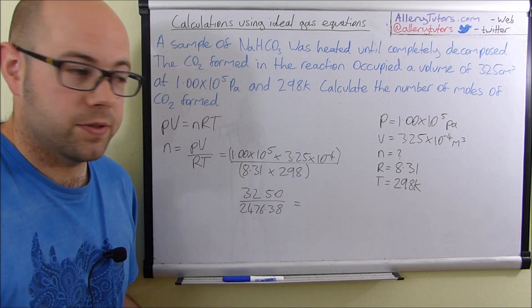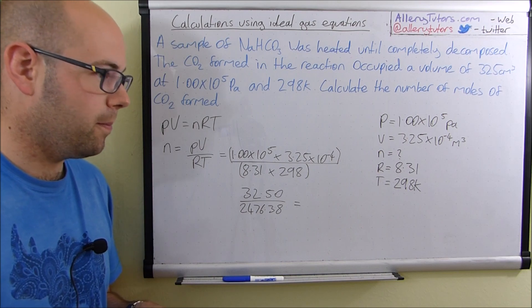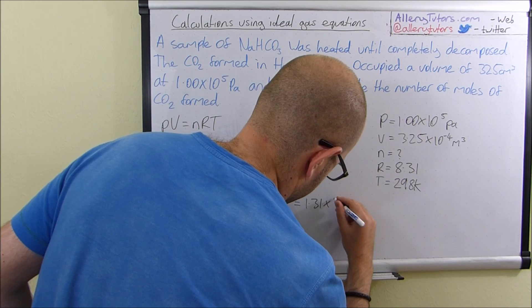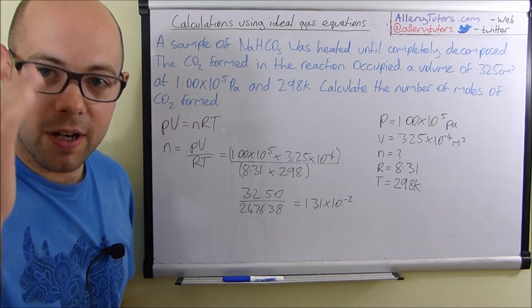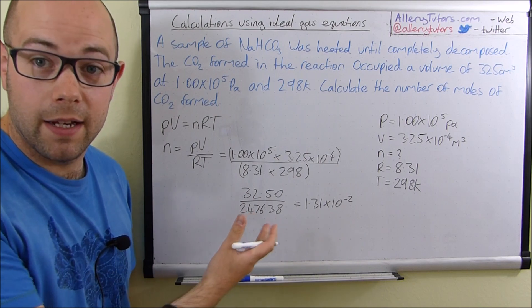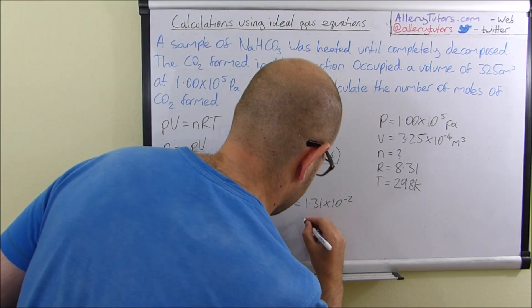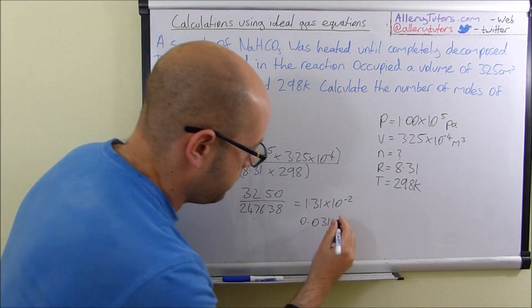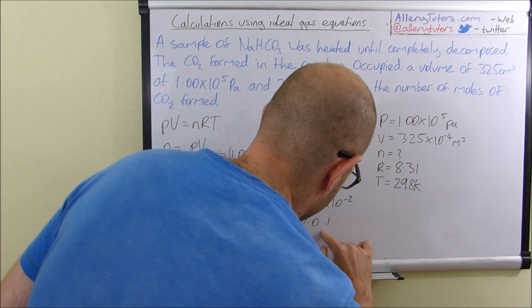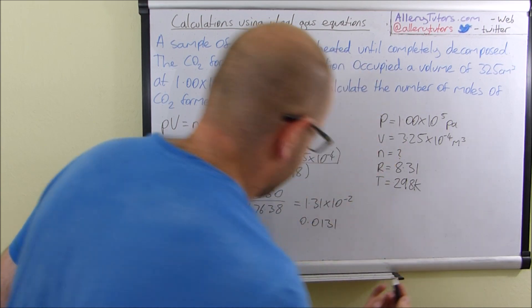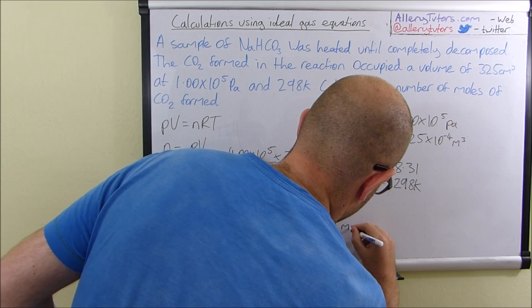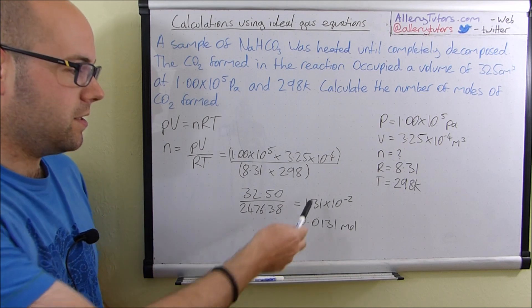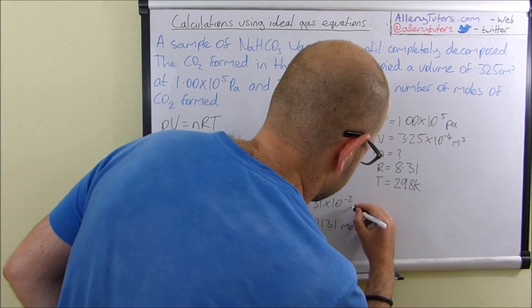And then if we use these numbers and divide them together, then we should get our answer in moles. And so our answer should be 1.31 times by 10 to the minus 2. Now, you might put that in your calculator. If you're alright with standard form, that's okay. Your calculator may show this as well, which is 0.0131. And this is moles, so just put that on the end. And there we have it. There's your answer. And you can write it in standard form or you can write it in standard decimals.